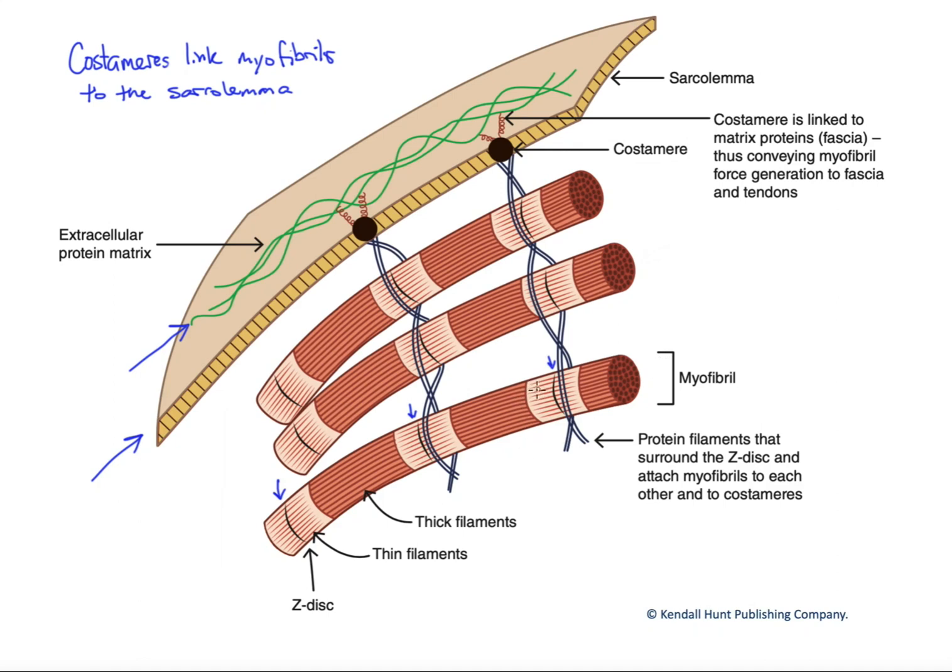Where they overlap, where we have this overlap between the thick and thin filaments in the zone of overlap, is where we would generate tension, pulling the Z-discs closer together. Every time we contract, we pull the Z-discs closer together. The same thing would happen in this particular sarcomere, and you see that we would get overall shortening there. Well, how do we transmit that force generation to tendons and bones?